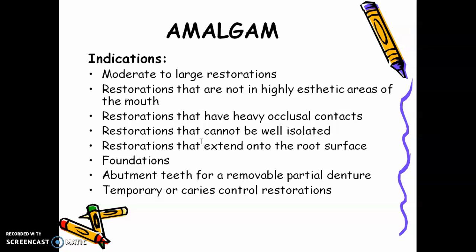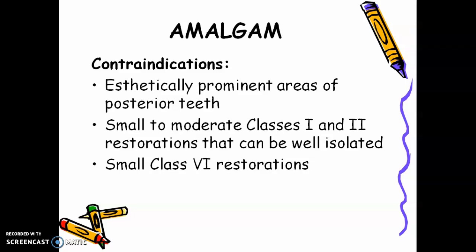You can use amalgam when you don't know whether the patient will decide for RCT or extraction, and amalgam is relatively cheaper. Contraindications for amalgam: aesthetically prominent areas of posterior teeth where the buccal areas can be seen when the patient smiles; small to moderate Class I and II restorations that can be well isolated and are not prone to moisture; and small Class VI restorations.